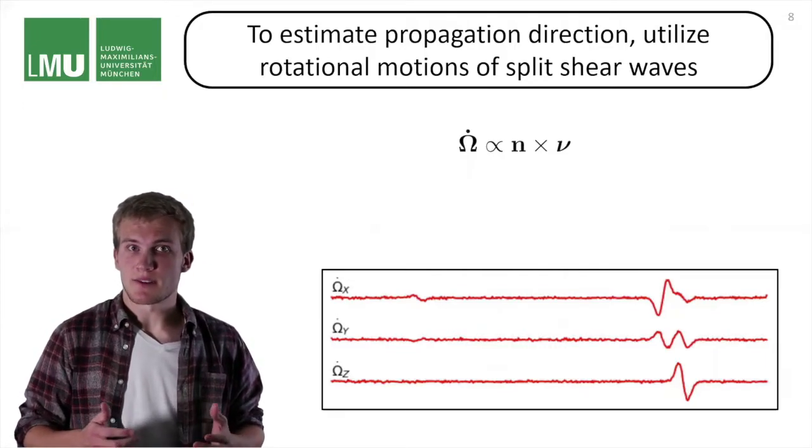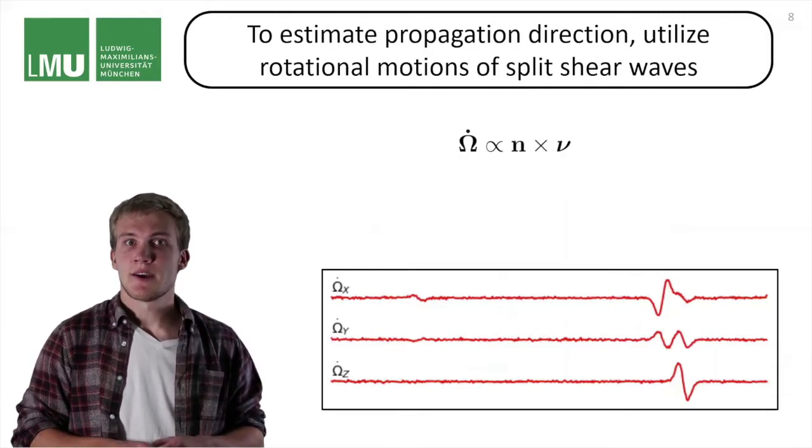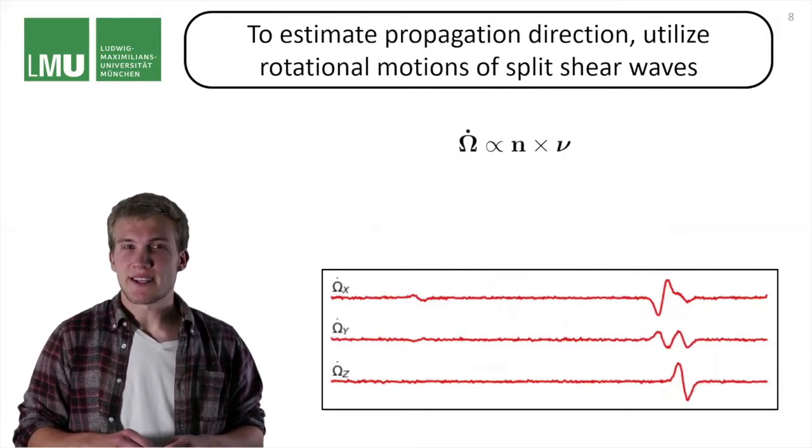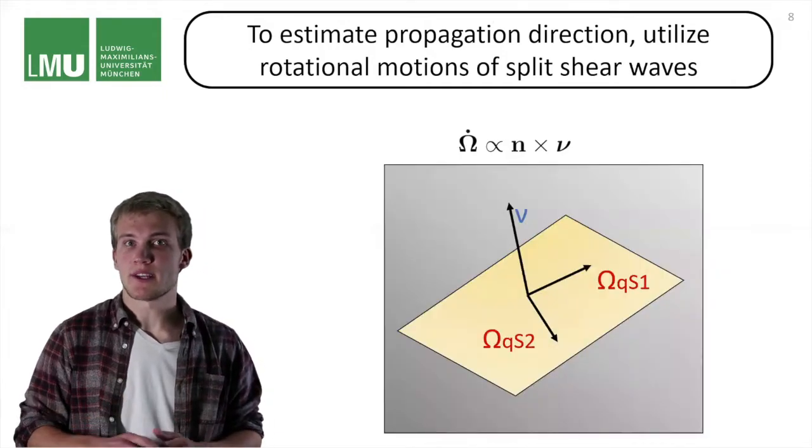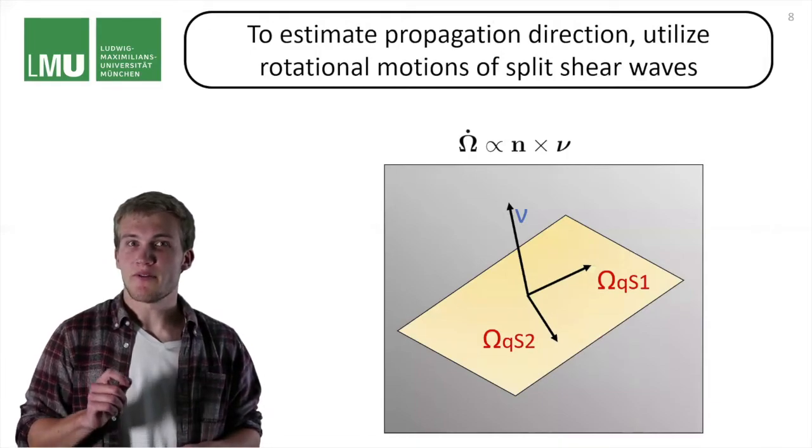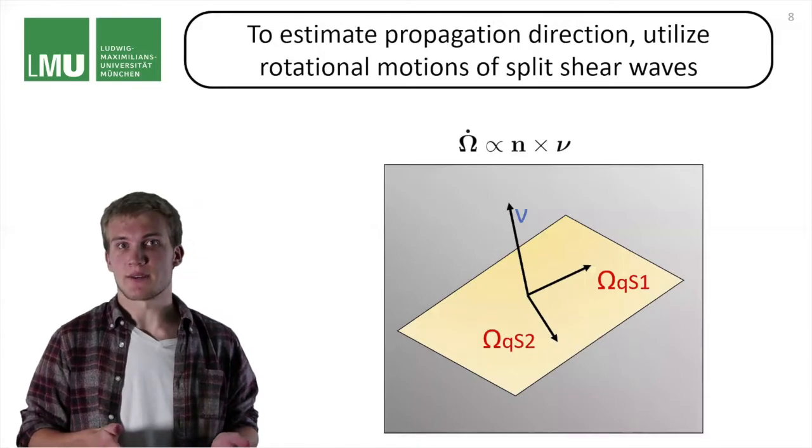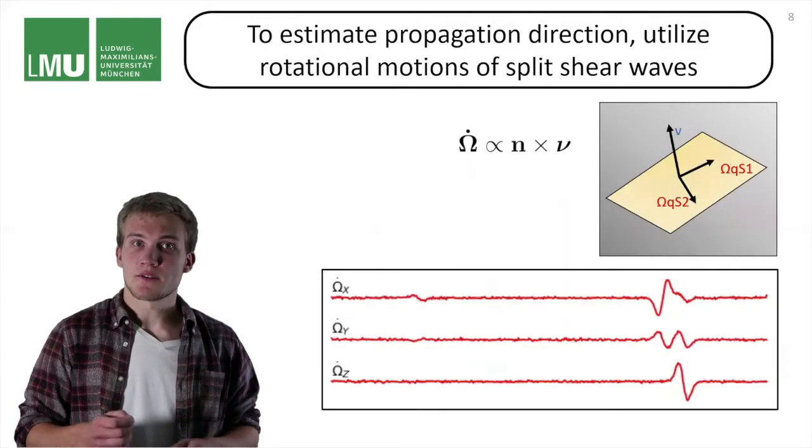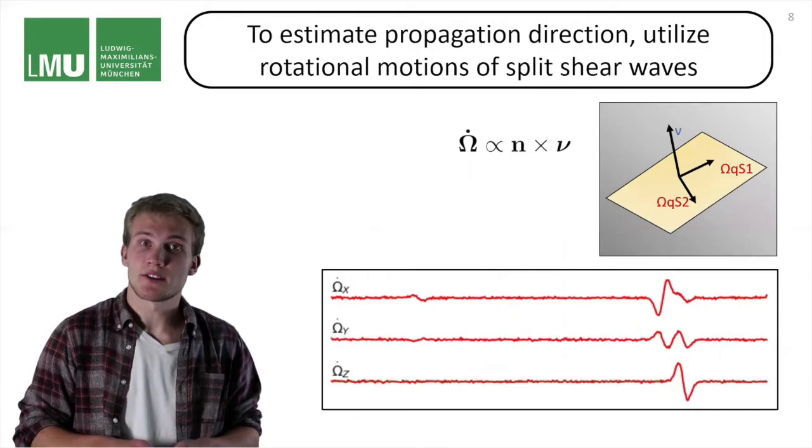Because we assume that propagation directions are uniform for all arrivals, all of the rotations are basically forced inside a plane that is perpendicular to the propagation direction. Now if we knew two vectors inside this plane, we could then solve for the propagation direction. And those two vectors are provided by the rotations of the split shear waves.